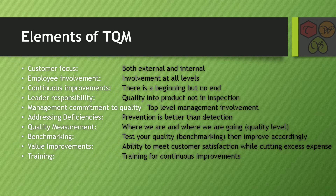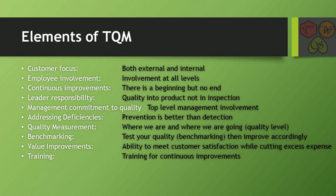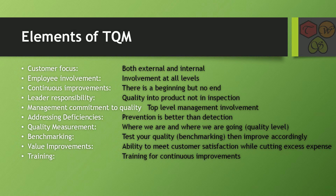The fourth one is leader responsibility. Any leader working in a company should focus on quality built into the product, not on the inspection. If you are making a product, the leader should focus on the quality going into the product, not on the inspection method. The fifth one is management commitment to quality. To implement TQM, the top-level management working in the company should focus on quality and should have 100% involvement in quality.